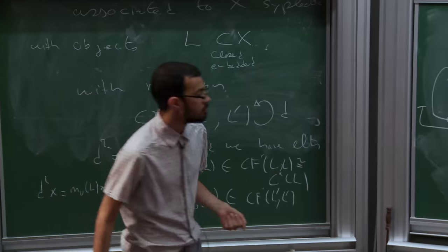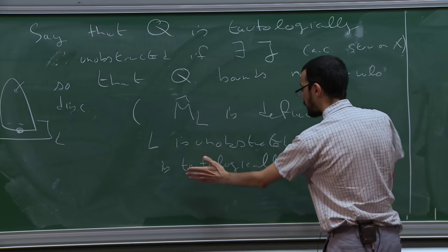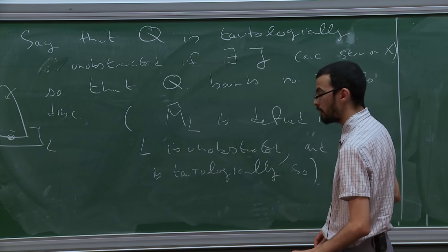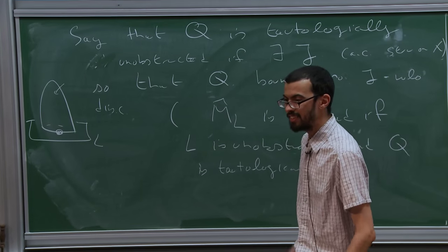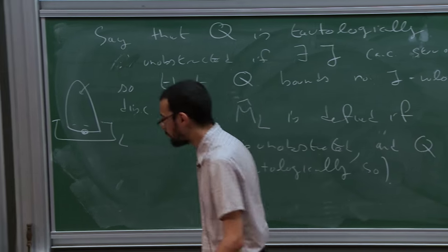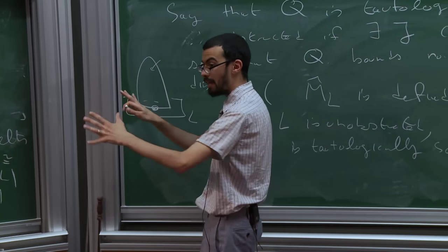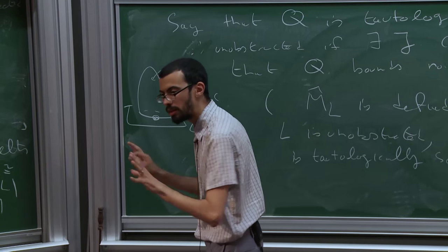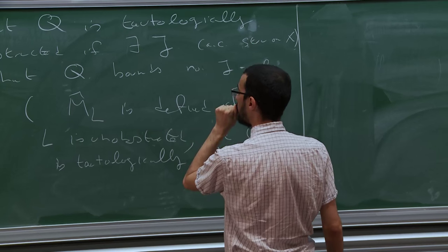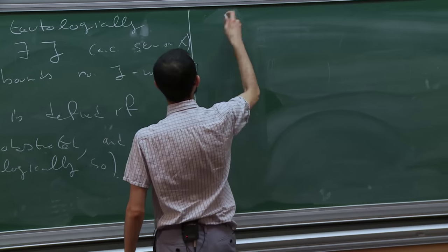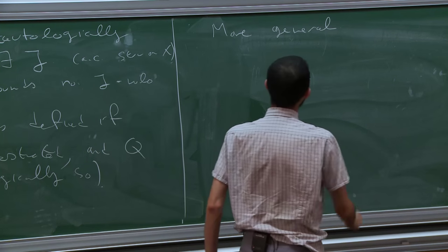This would not be defined if Q were only unobstructed — then you'd have a problem. But if they're both tautologically unobstructed, then it's true. Tautological is stronger — for one particular J, that's good enough. You just use that J in your construction. When you define Floer theory and look at your disks, you don't have to use the same J at all points. So when L and Q interact, you just make them use different Js.